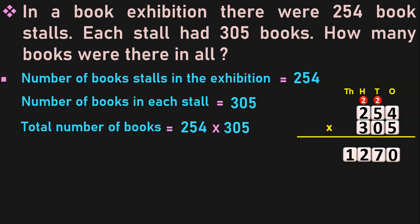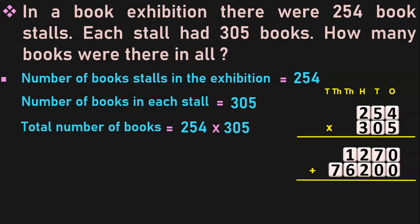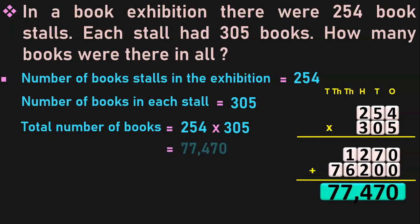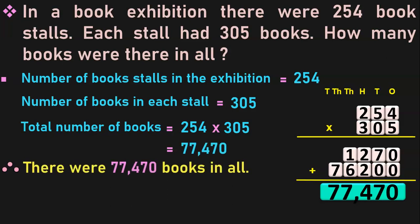Now multiply 254 by 300 directly because 3 is in the 100's place. Add a 0 in the 1's place and another 0 in the 10's place, then multiply by 3: 3 into 4 is 12; 2, carry over 1. 3 into 5 is 15; 15 plus 1 is 16; 6, carry over 1. 3 into 2 is 6; 6 plus 1 is 7, moved to the 10's place. Add the two products: 0 plus 0 is 0; 7 plus 0 is 7; 2 plus 2 is 4; 1 plus 6 is 7; and 7 in the next place. The answer is 77,470. Therefore there were 77,470 books in all.